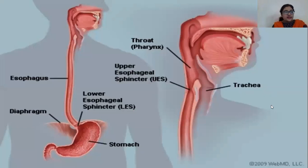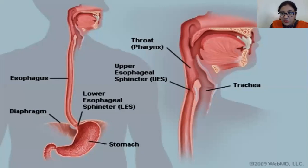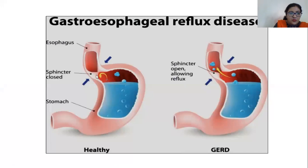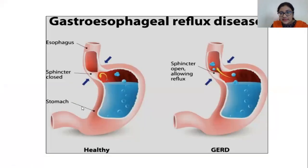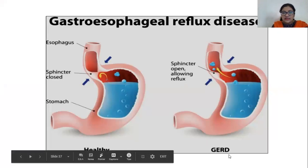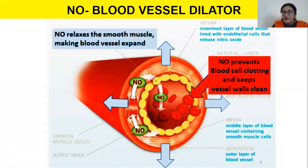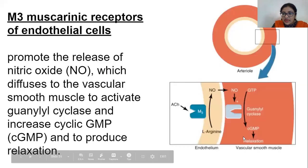Regarding GI sphincters: the lower esophageal sphincter contracts. This is important because when the lower esophageal sphincter relaxes, acid reflux occurs. Contraction prevents reflux. The condition of acid reflux is called GERD — gastroesophageal reflux disease.